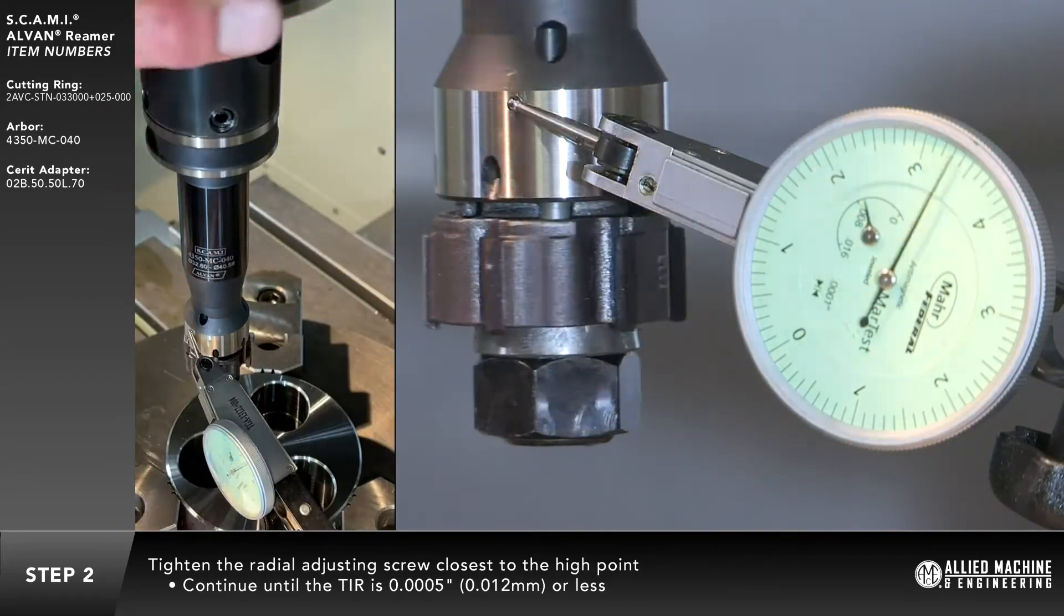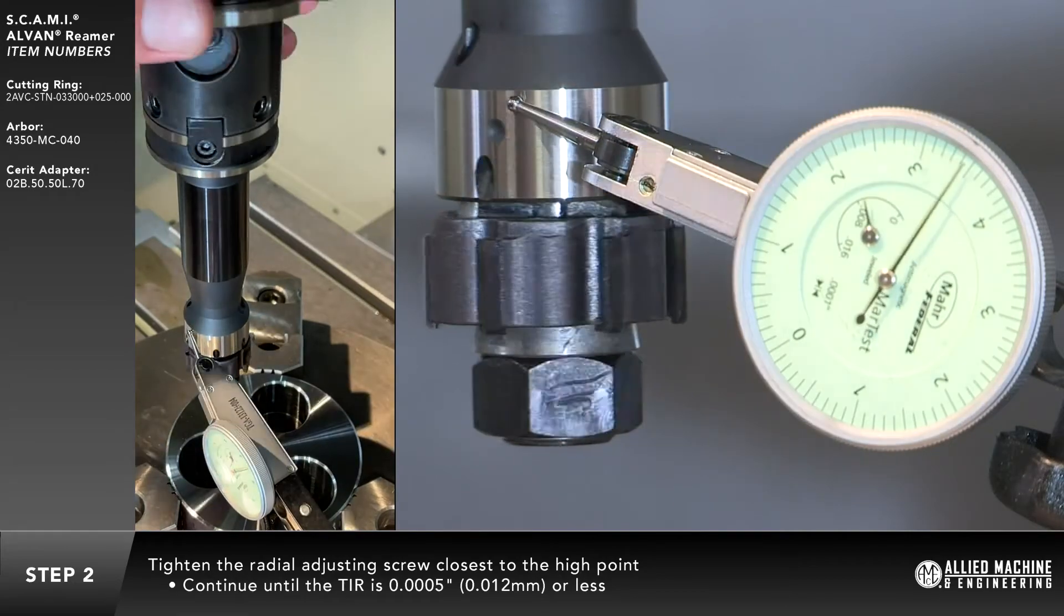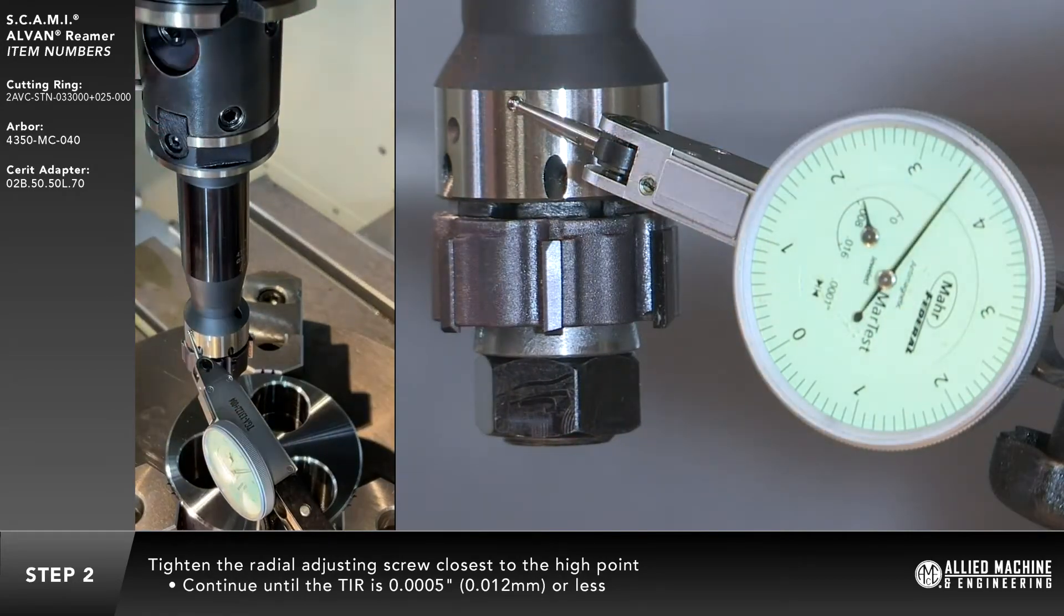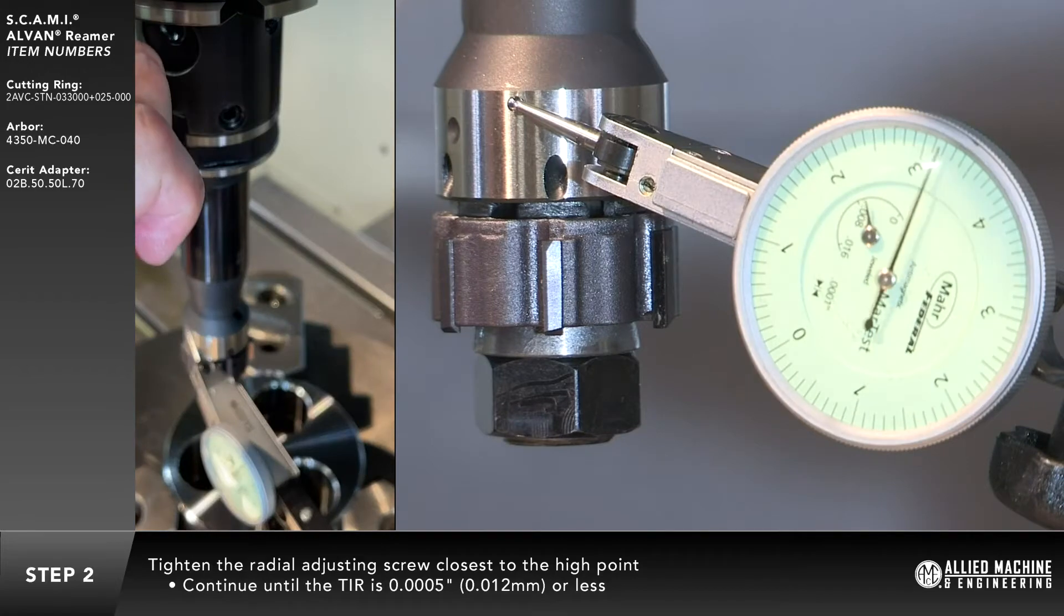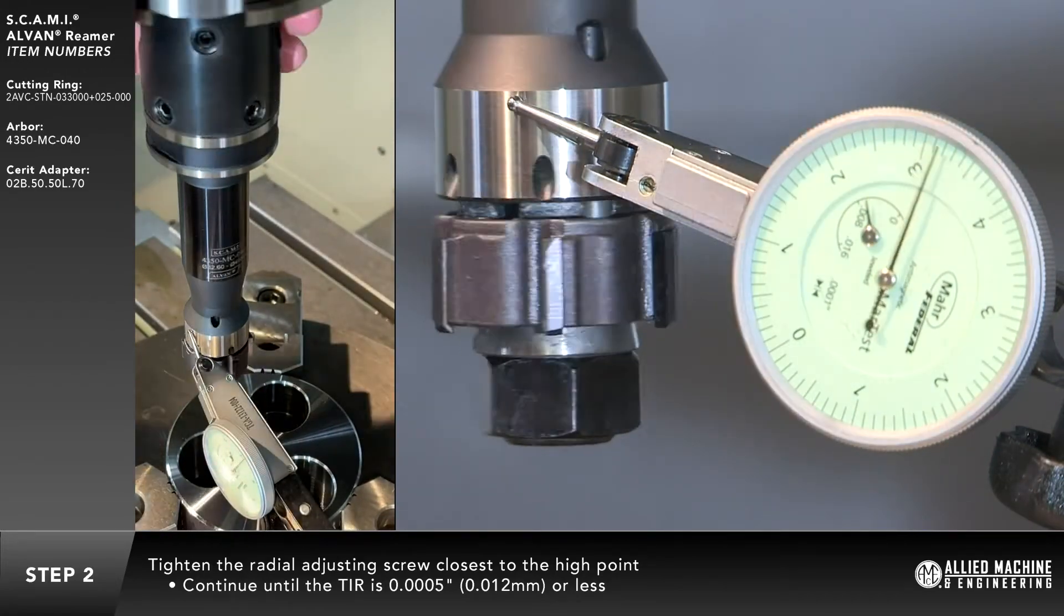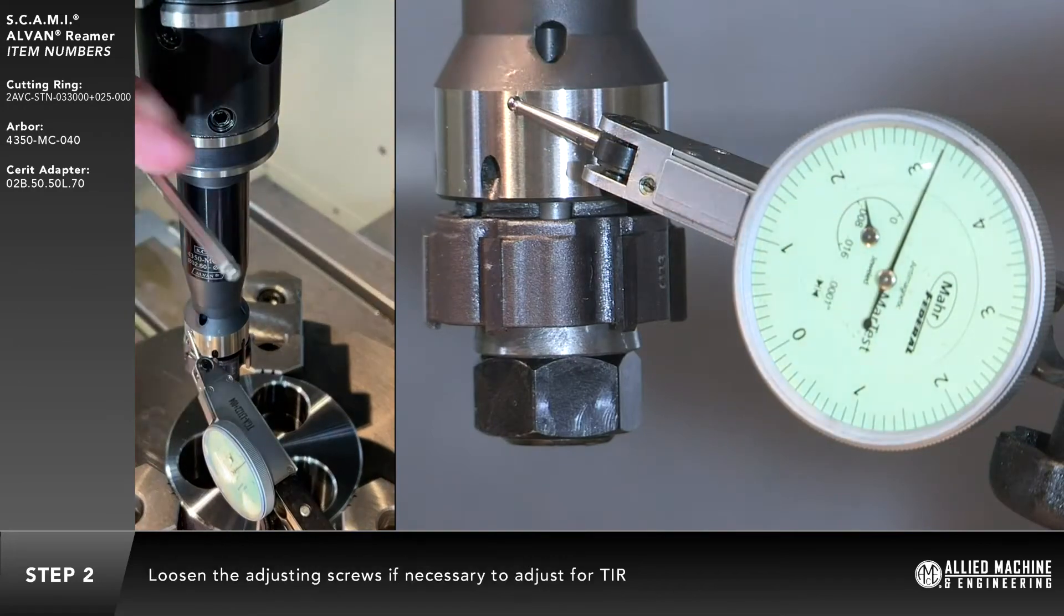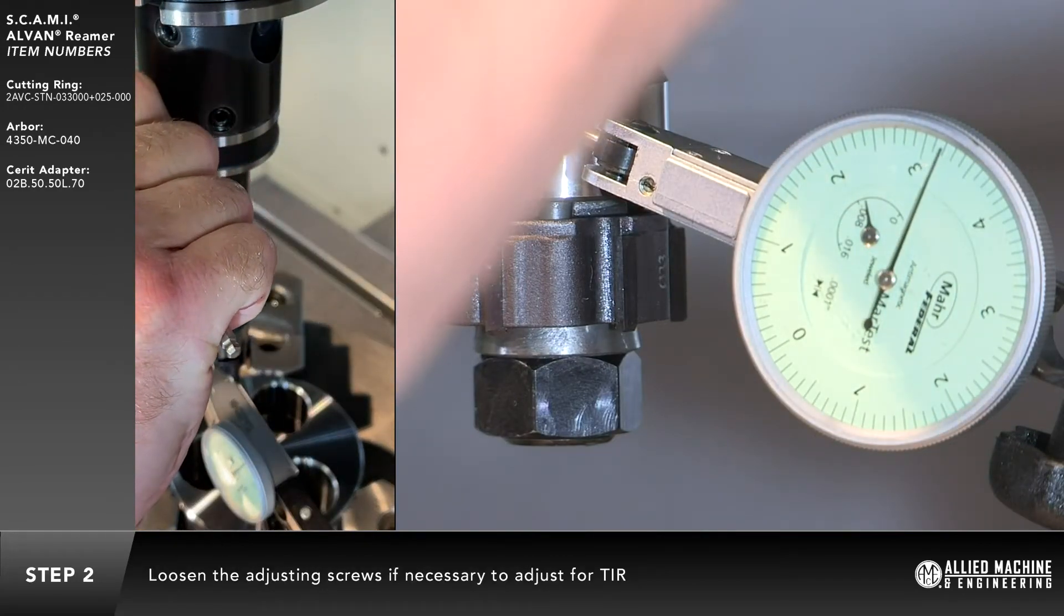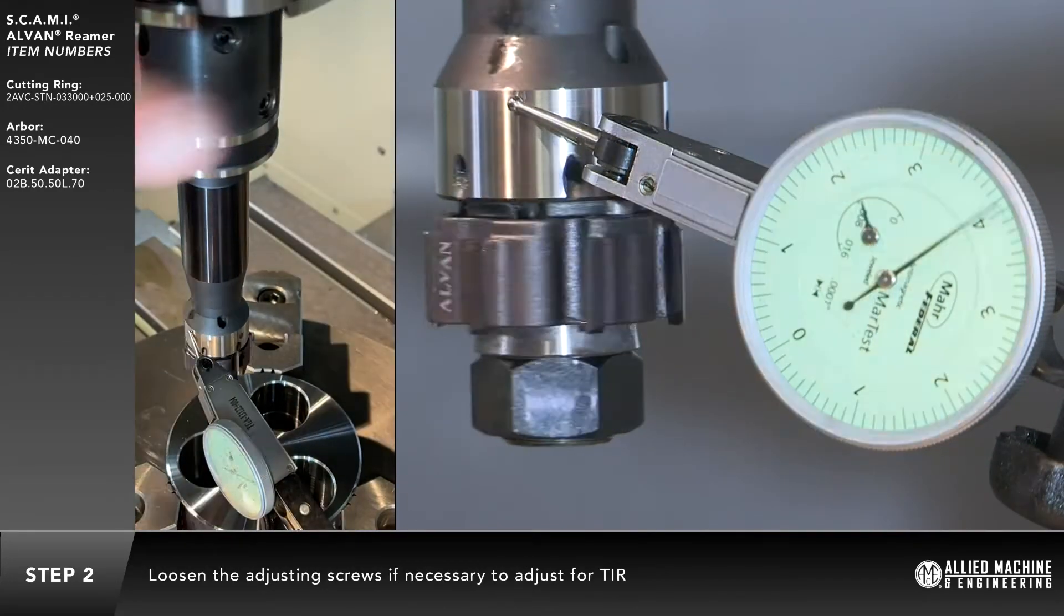This will ensure the TIR check on the cutting teeth will be true. It also indicates the arbor is running true to the shank. You may need to loosen the radial screws if necessary to adjust for TIR.